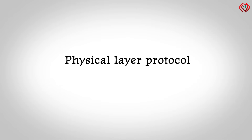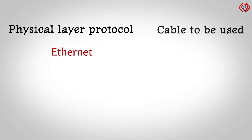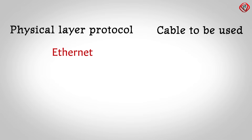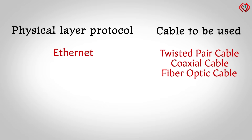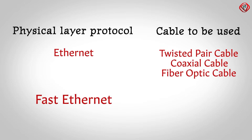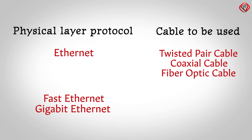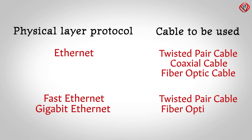The most common protocol used at the physical layer is Ethernet. The protocol also specifies the type of cables that can be used for data transmission. For example, if the protocol used is Ethernet, then twisted pair cable, coaxial cable, and fiber optic cable can be used for data transmission. If the protocol used is Fast Ethernet or Gigabit Ethernet, then twisted pair cable or fiber optic cable can be used as local media.